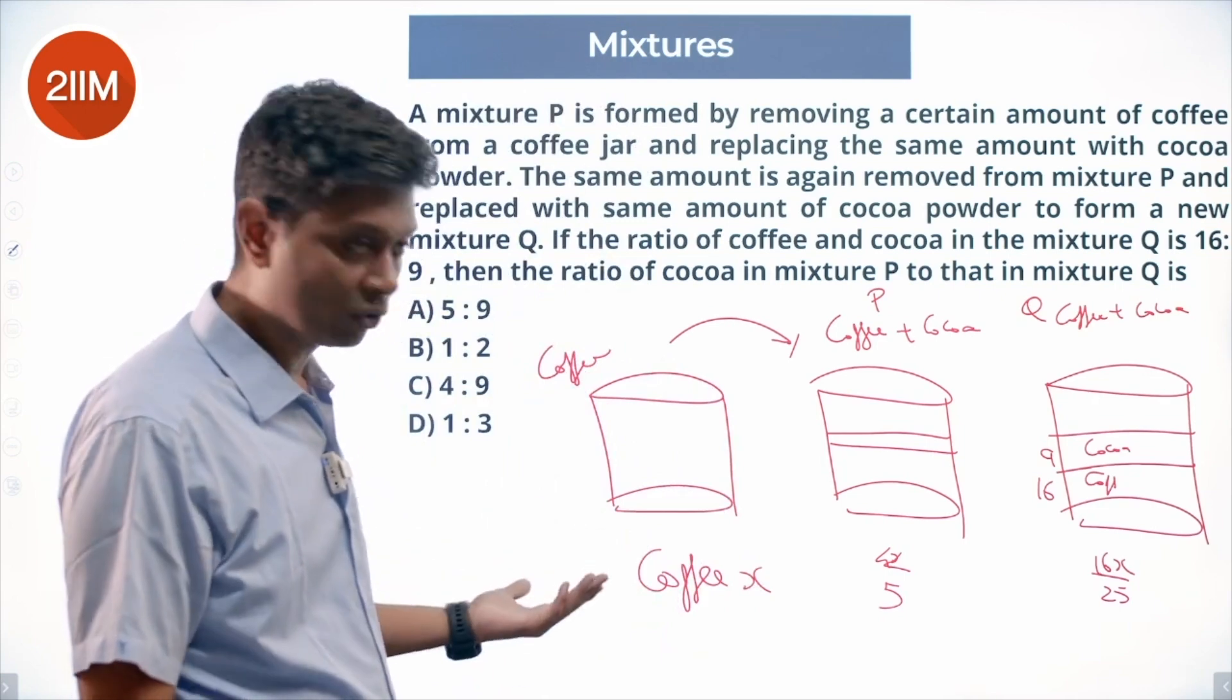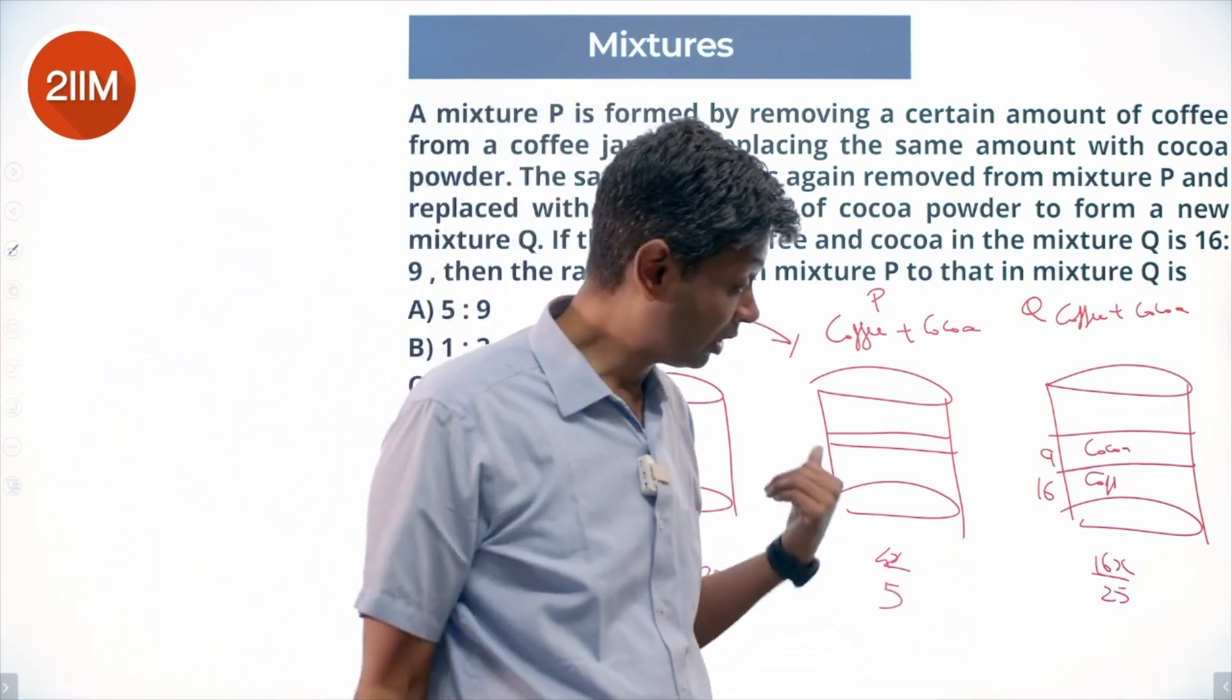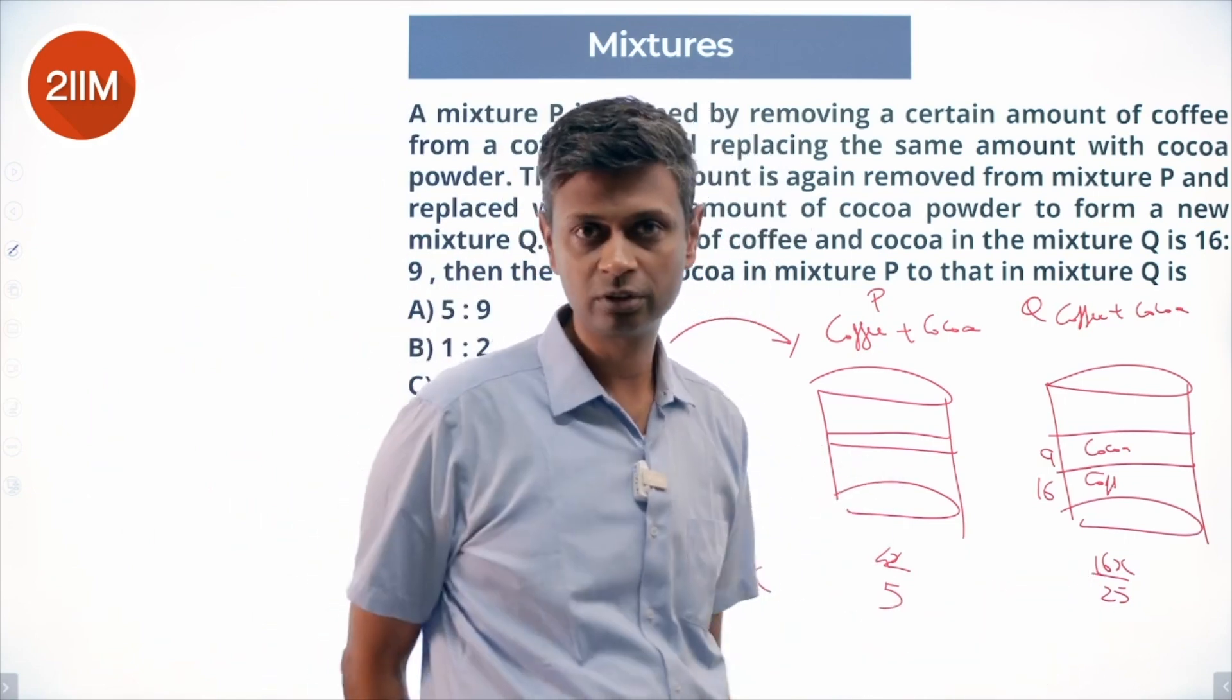So x of coffee becomes 4x/5 of coffee, remaining x/5 is cocoa, becomes 16x/25 of coffee, remaining 9x/25 is cocoa.